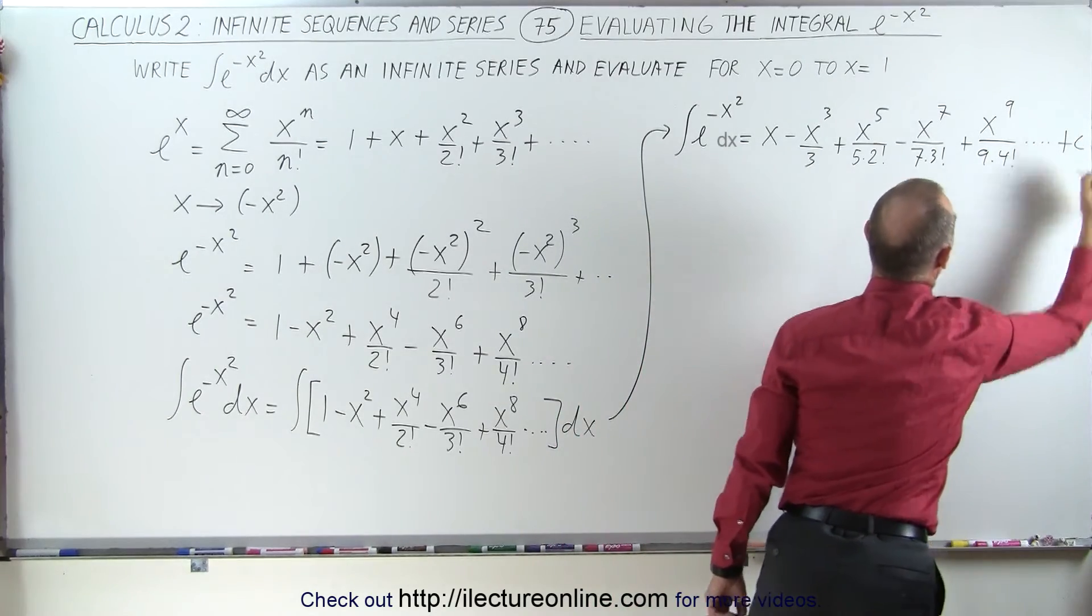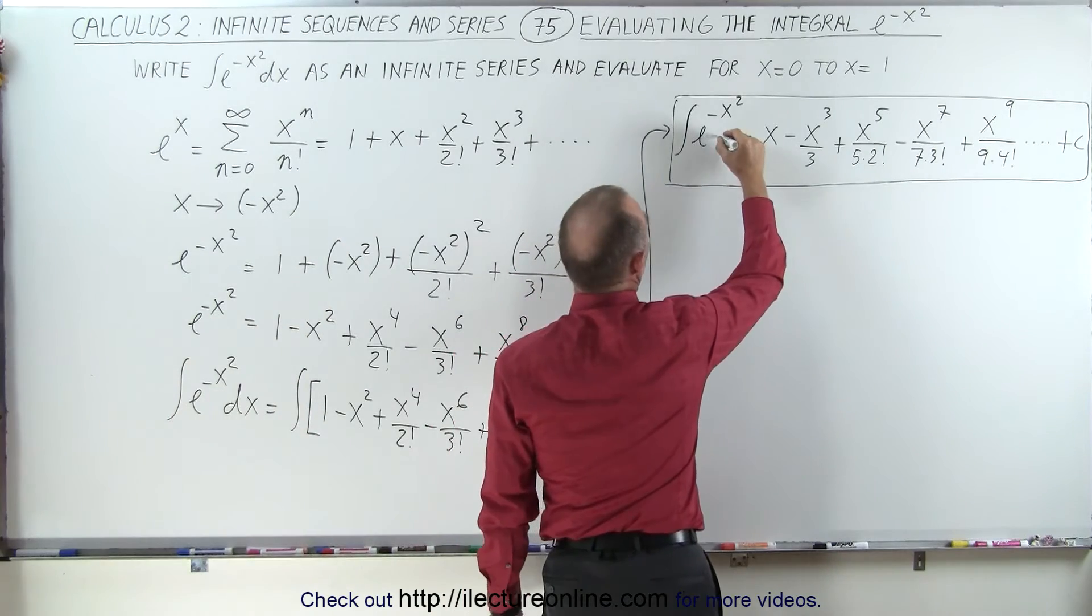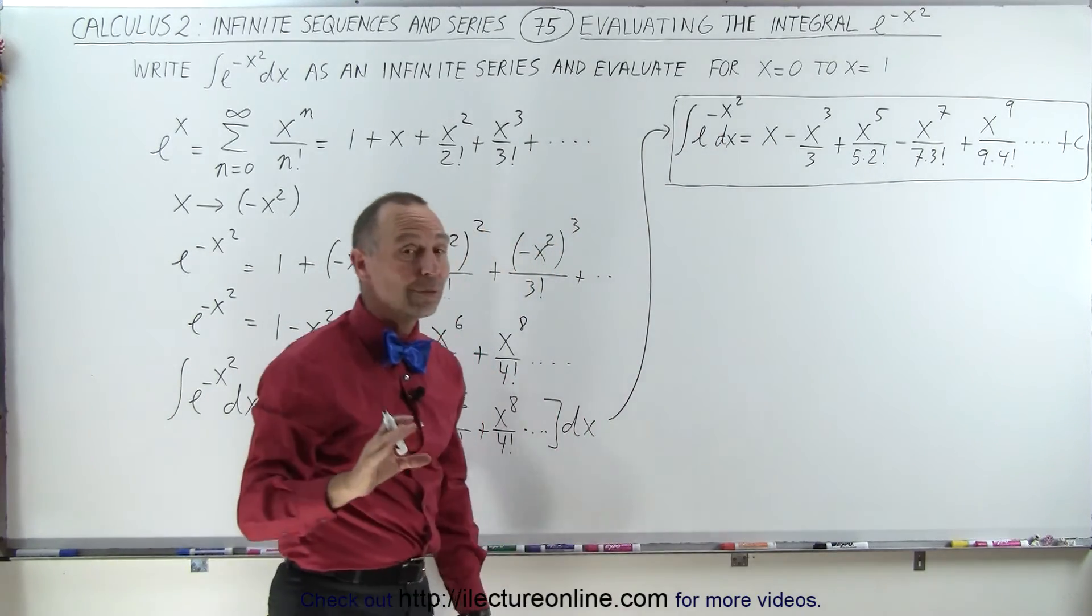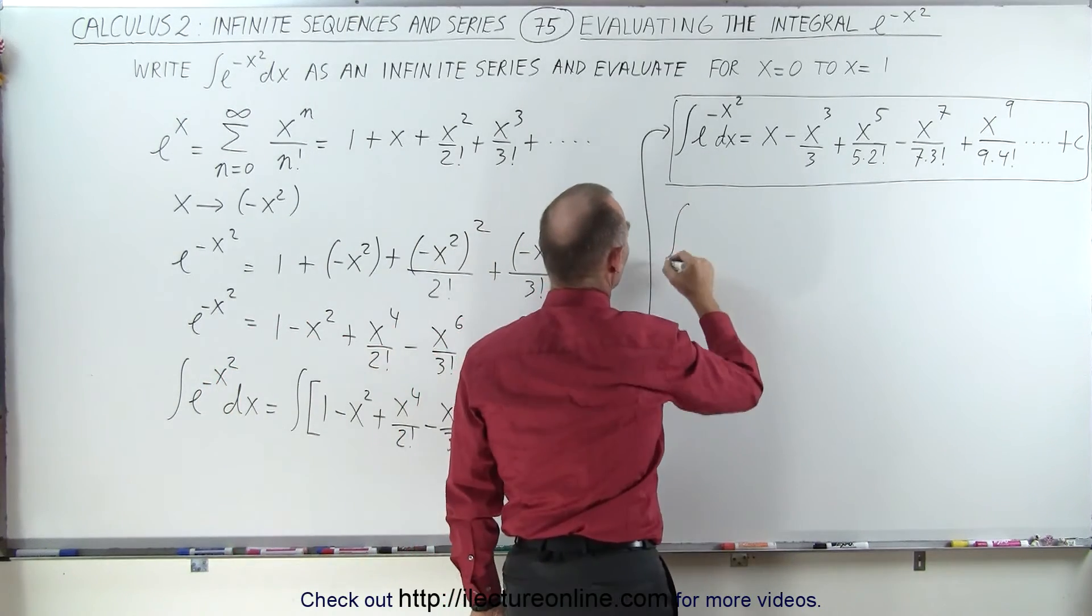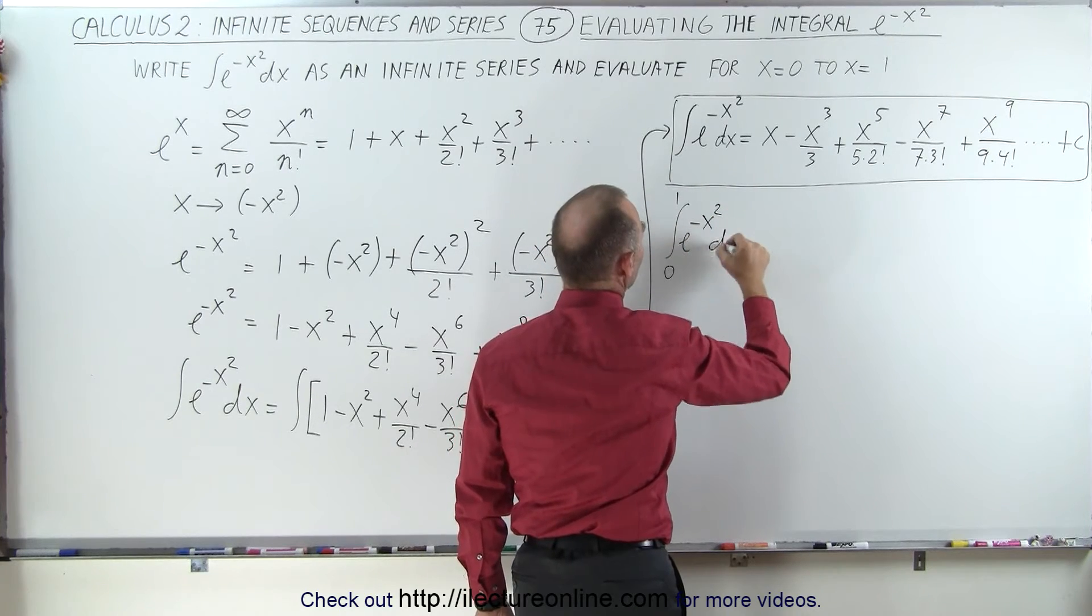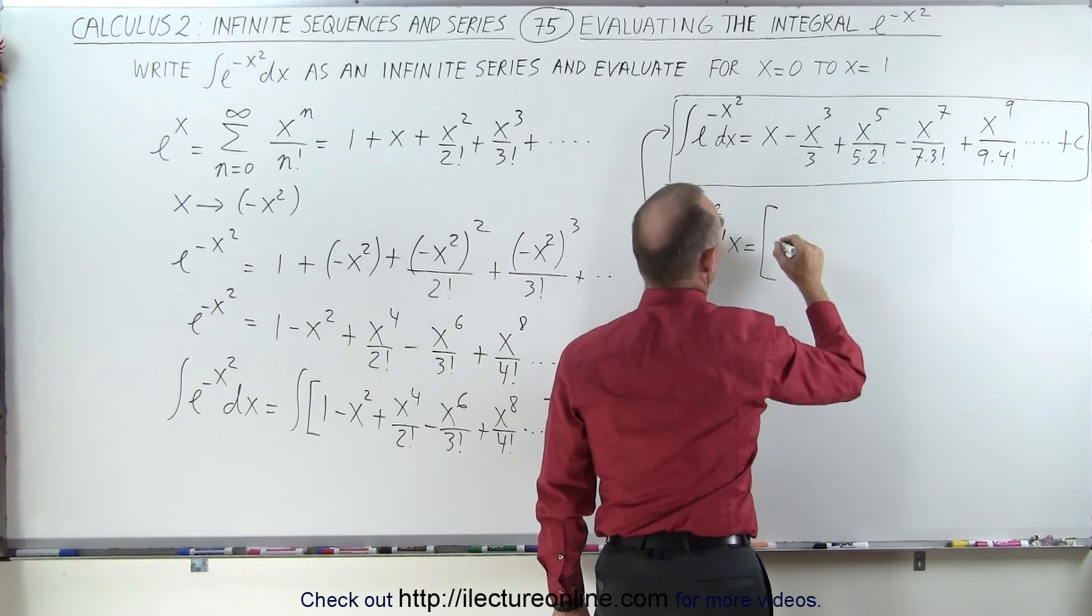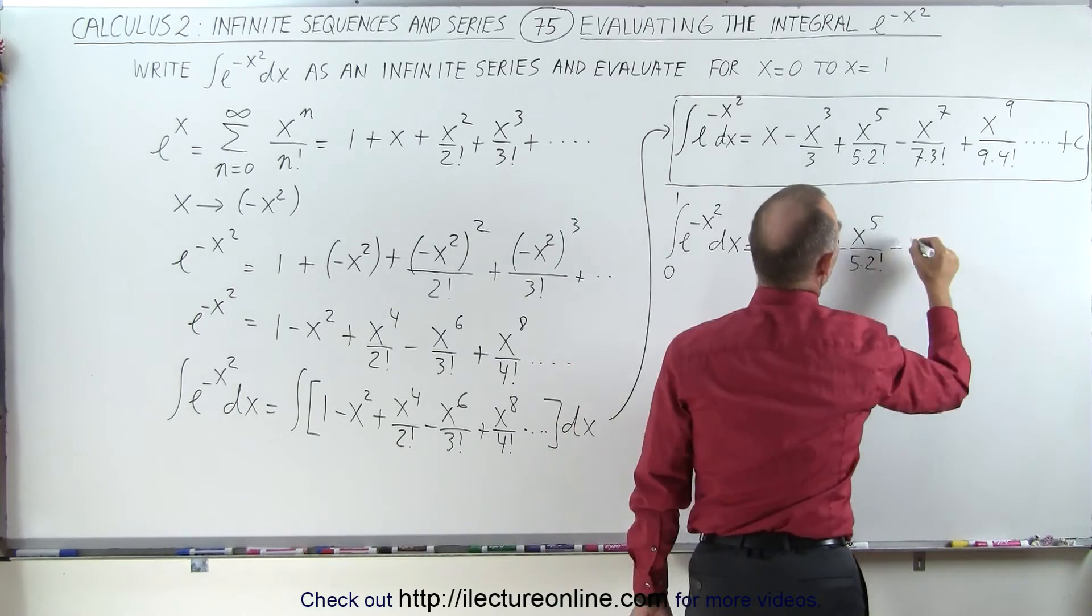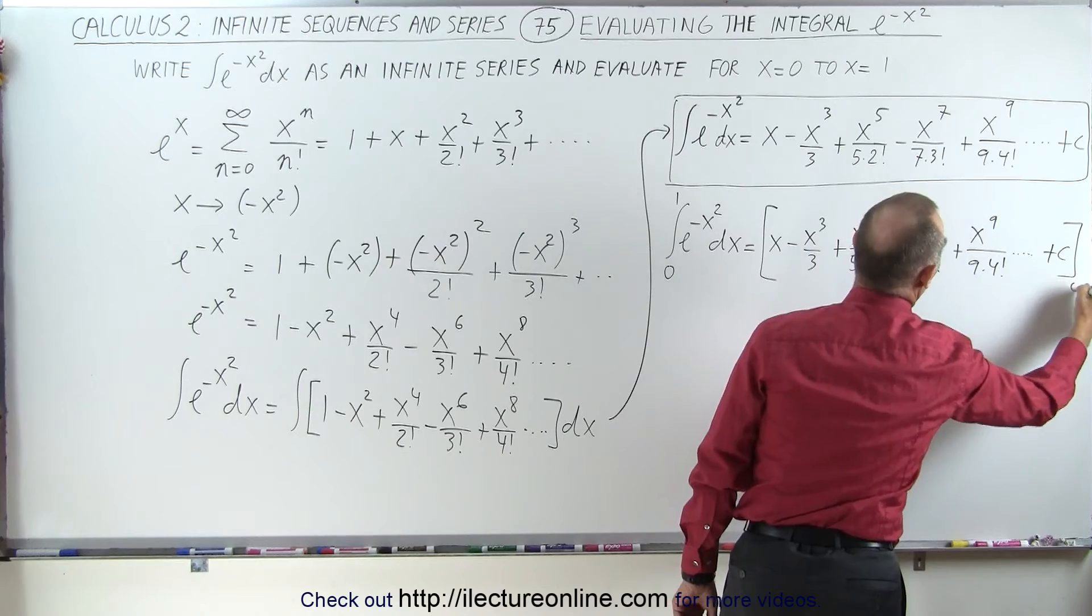Of course, you also have a constant of integration. By the way, we should put in a dx to make it complete. Now, we're going to evaluate that integral from x equals 0 to x equals 1. So, that means the integral from 0 to 1 of e to the minus x squared dx is equal to evaluating this whole sum from 0 to 1. So, we get x minus x cubed, we can't forget the constant of integration from 0 to 1.